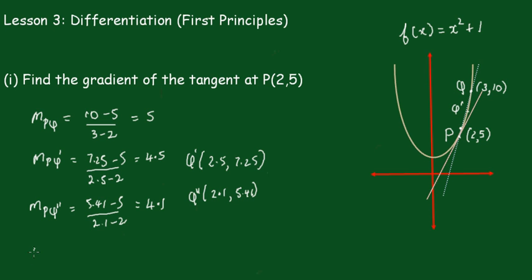I'll get really close with Q''' at coordinates (2.01, 5.0401). The gradient PQ''' equals 5.0401 - 5 over 2.01 - 2, which gives 4.01.